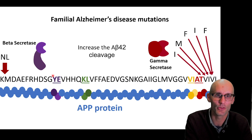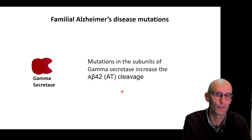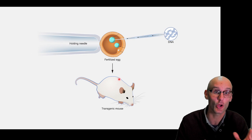There are also mutations in the gamma secretase, which is the enzyme that cleaves the amyloid precursor protein, and they promote the AB-42 cleavage site. These mutations can cause an increase in amyloid beta-42 production in the brain. So what we want to do, obviously to get a good animal model, is that these familial Alzheimer's genes are going to be an excellent opportunity to create an Alzheimer's mouse model.